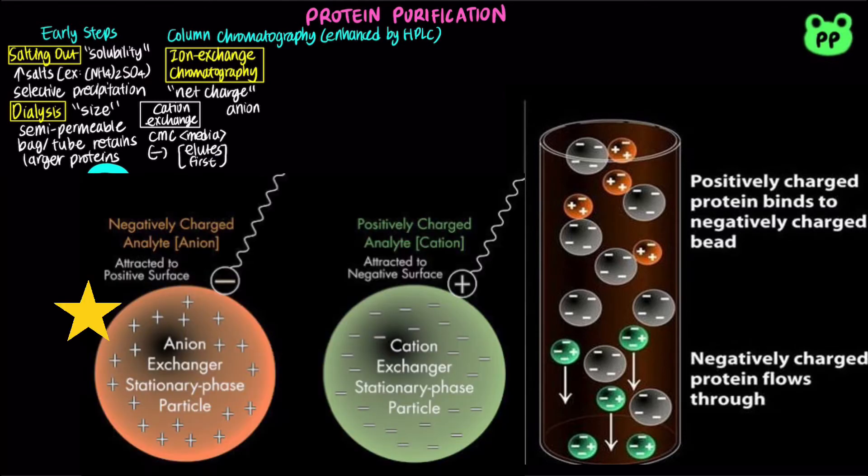In anion exchange chromatography, the column is positively charged, typically consists of diethylaminoethyl cellulose, abbreviated as DEAEC. As a result, proteins with net positive charge elute first.